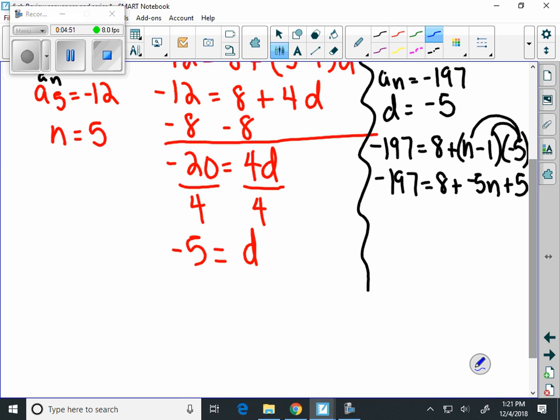We can combine our terms. 8 plus 5 here, we get negative 197 equals 13 minus 5n. Notice plus a negative 5n is just minus 5n.